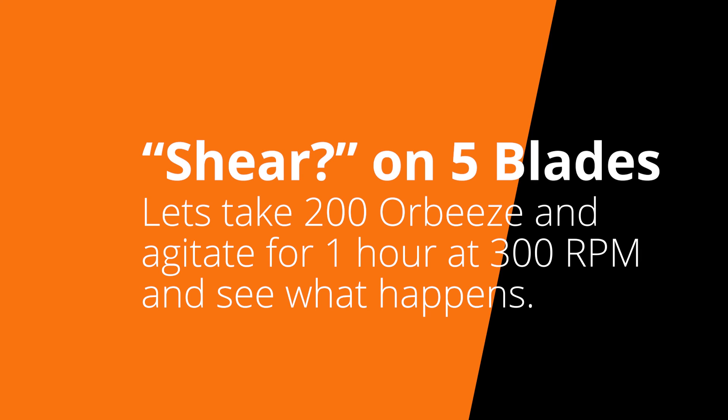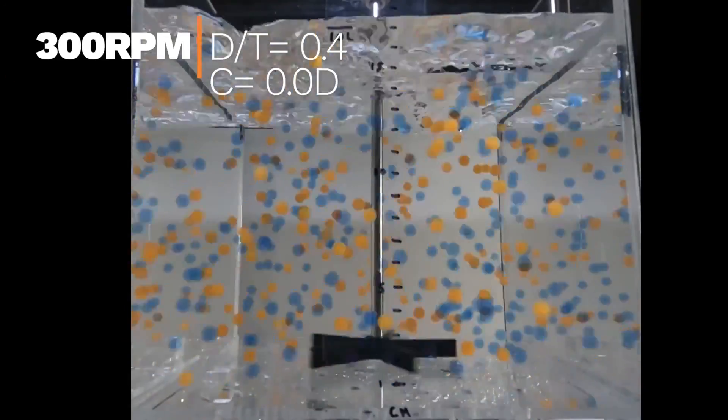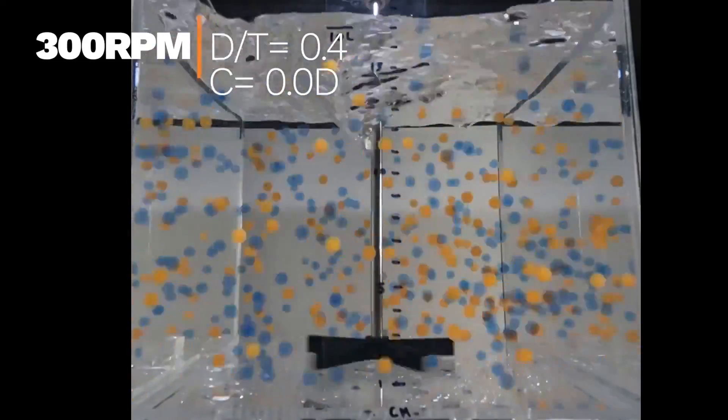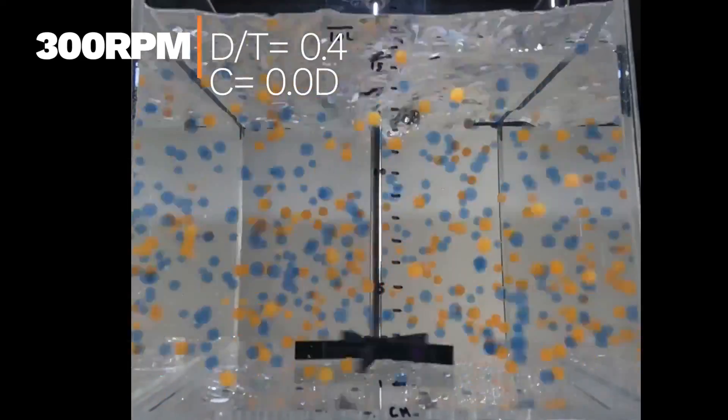How does the flat blade impeller perform in the shear test? Let's find out. As previously mentioned, rotational speeds of 300 RPM subject trichomes to tremendous shear forces. In theory, Orbeez, though apparently stronger than trichomes, should show signs of stress.